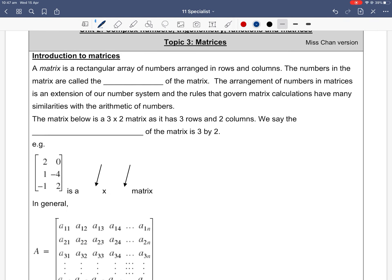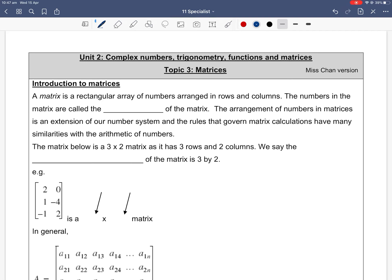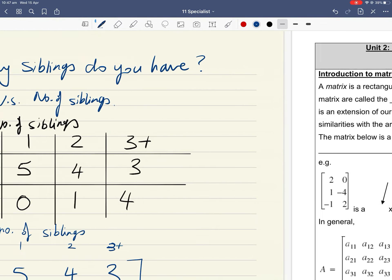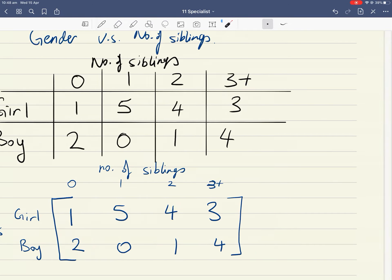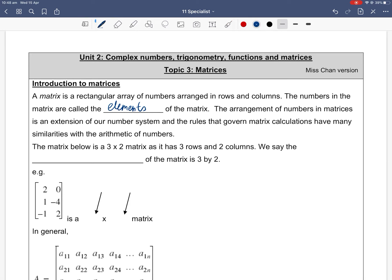Back to our notes. A matrix is a rectangular array of numbers arranged in rows and columns. It's like a table with rows and columns. The numbers in the matrix are called the elements of the matrix. In the gender versus number of siblings example, these numbers inside—1, 5, 4, 3, 2, 0, 1, 4—they individually are called elements in my matrix. The arrangement of numbers in matrices is an extension of our number system, and the rules that govern matrix calculations have many similarities to the arithmetic of numbers. For example, 2 plus 3 is 5, which is the same as 3 plus 2. The order of addition does not matter. That holds the same for matrices. That being said, though, the order swapping in multiplying does not work for matrices.